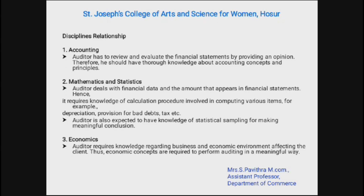The first discipline relationship is accounting. The auditor has to review and evaluate the financial statements by providing an opinion; therefore, they should have thorough knowledge of accounting concepts and principles. The second is mathematics and statistics — the auditor deals with financial data and amounts appearing in financial statements, requiring knowledge of calculation procedures involved in computing various items such as depreciation.